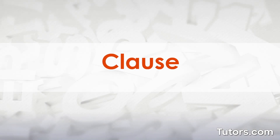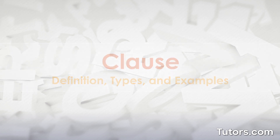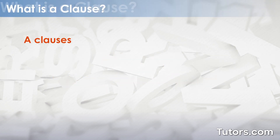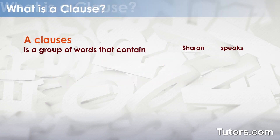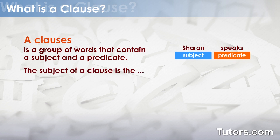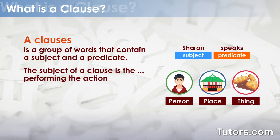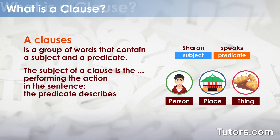What is a clause? A clause is a group of words that contain a subject and a predicate. The subject of a clause is the person, place, or thing performing the action in the sentence. The predicate describes the action the subject performs.